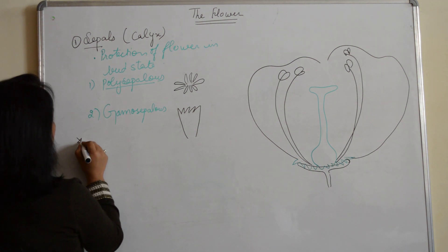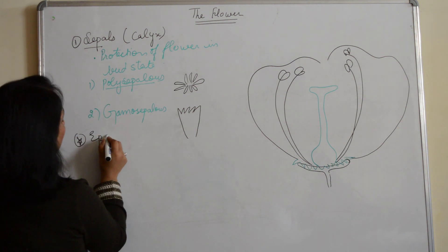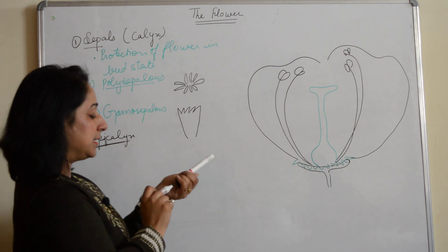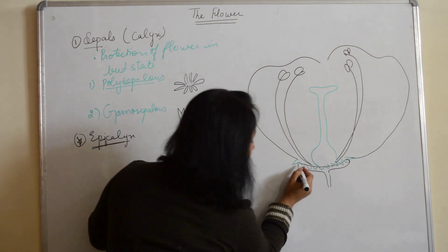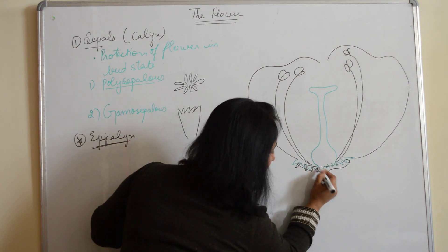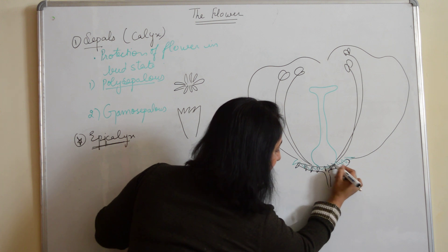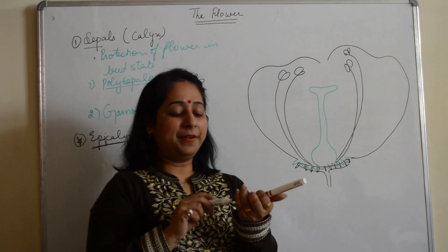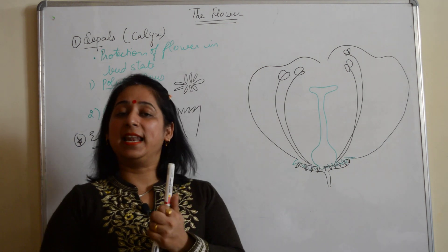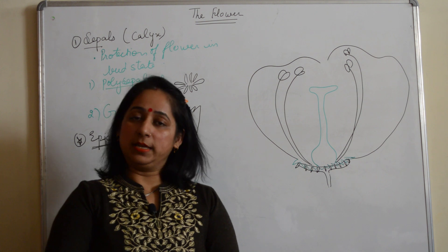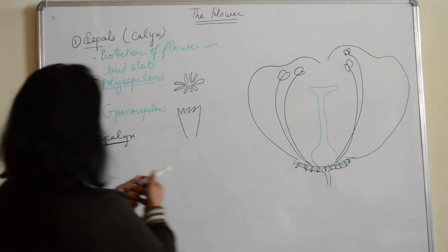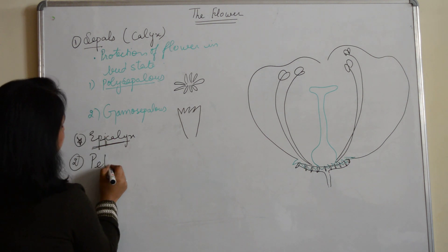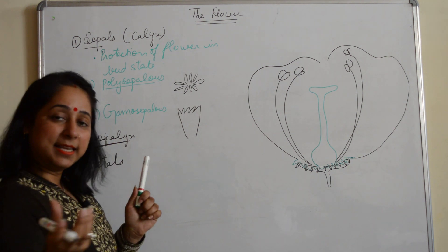In some flowers we also have a structure known as epicalyx. Sometimes there are small leaf-like structures beneath the sepals — these are known as the epicalyx. It is an additional fifth whorl below the sepals or calyx.